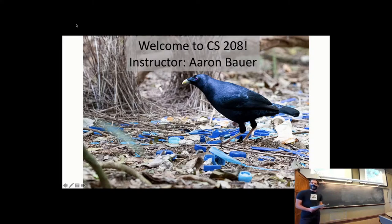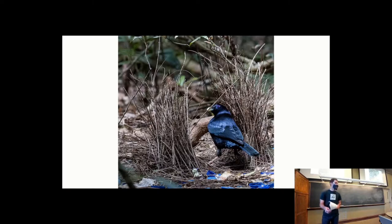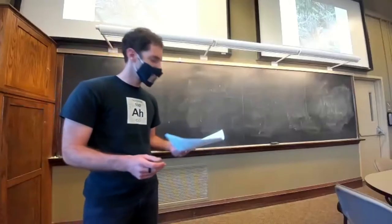Interesting thing about this bower bird that lives in Australia. It really likes blue things. It makes this bower to attract a mate and just finds everything blue that it can. Plastic, ribbon, string and puts it all over. And we can also see it assembling the non-blue part of the bower here. So that concludes the bird portion of today.